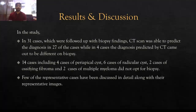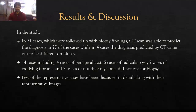Results and discussion: In the study of 45 patients, out of 31 patients who underwent biopsy, CT was able to predict the diagnosis in 27 cases, while 4 cases predicted by CT came out different on biopsy. These included cases of periapical cysts, radicular cysts, ossifying fibroma, and multiple myeloma.